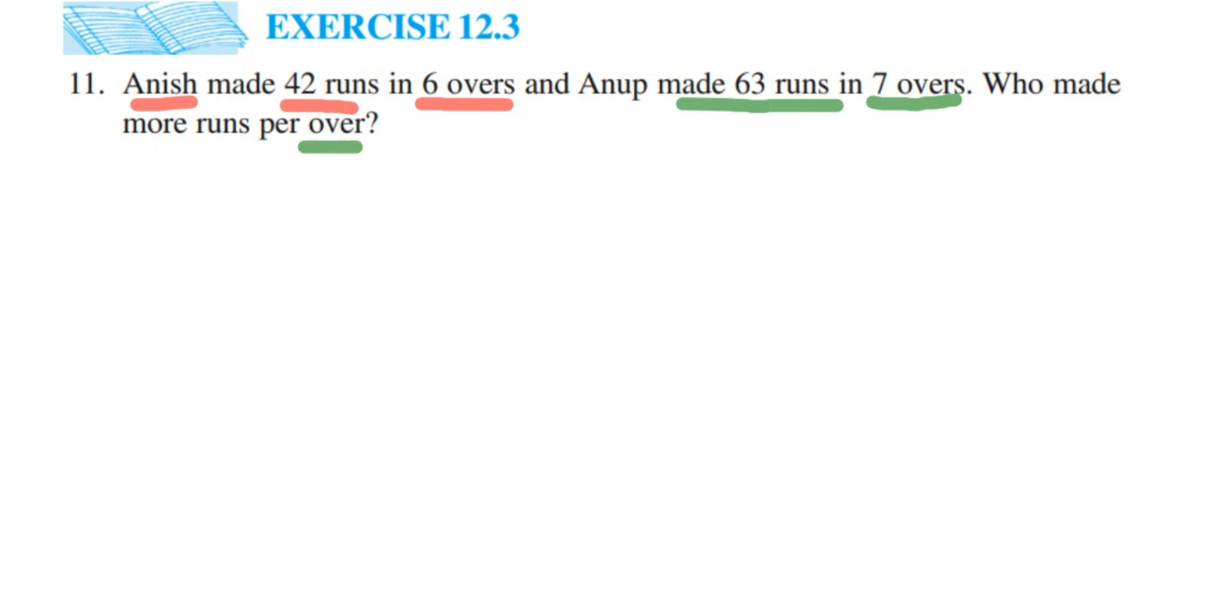If we know in 1 over how many runs they made each, then we can compare who has got the most scores and we can say that that person has made more runs here. So how to find out how many runs they made per over? Per over means per 1 over we have to find out.